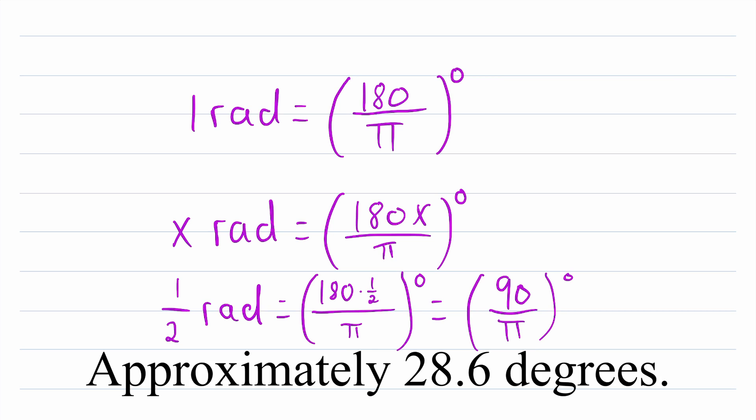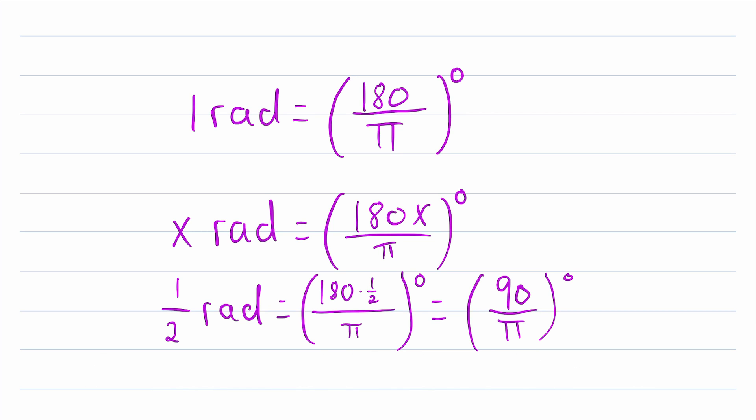So that's all there is to it. I hope this video helped you understand how to convert from radians to degrees. If you want to learn about converting in the other direction, you can actually use this same equation. You just have to do a little bit of work to get there. I also have a lesson just like this one on converting in the other direction. So one last time, if you want to convert x radians into degrees, it's just equal to 180 times x over π degrees.